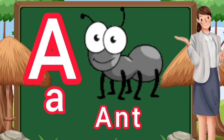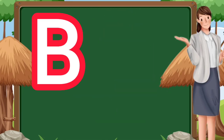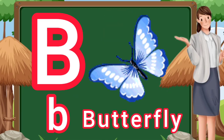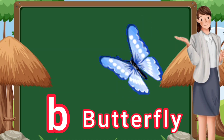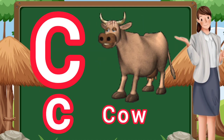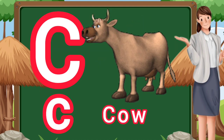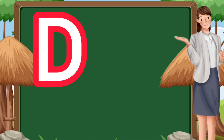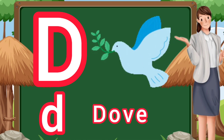A. A for ant. B. B for butterfly. C. C for cow. D. D for dove.